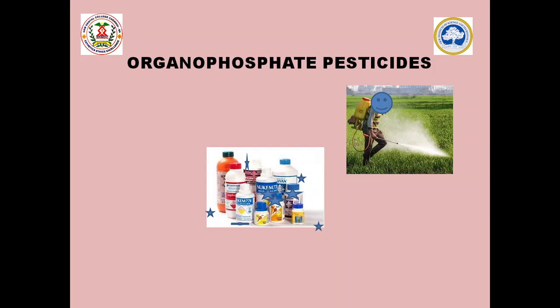Organophosphate compounds are commonly used as pesticides in the agricultural industry, so the chances of getting exposed to pesticide is at a greater rate among people involved in that sector. Pesticide poisoning may occur either suicidal, homicidal, or accidentally. Whatever it may be, the consequences are severe. Globally, around 1 million cases of pesticide intoxication have been reported, and around 20,000 people are dying every year due to organophosphate pesticide poisoning.